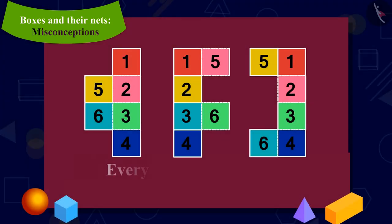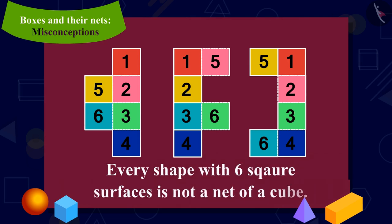In other words, every shape with six square faces is not a net of a cube.